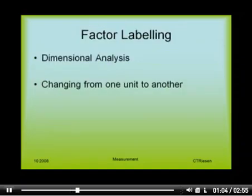Factor labeling is also called dimensional analysis. It's simply to change from one unit to another, and it keeps the quantity of the measurement the same. This is done virtually by everyone all the time. For instance, when we exchange four quarters for a dollar, we are factor labeling.